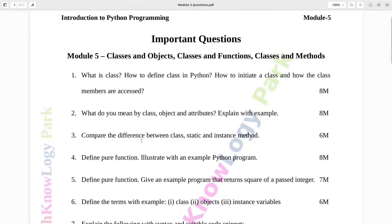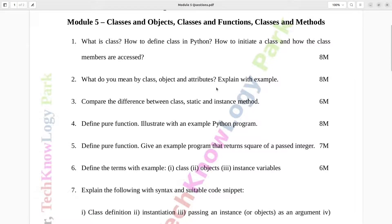Question number two. What do you mean by class, object and attributes? Explain with example. Eight marks.